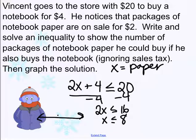Meaning that to graph this, I am going to have it closed on 8 because he can buy 8 packages of paper. He'll have just enough money and any amount less than that. And yes, theoretically, we couldn't go past 0 into the negatives. But we could go 0 all the way through 8.